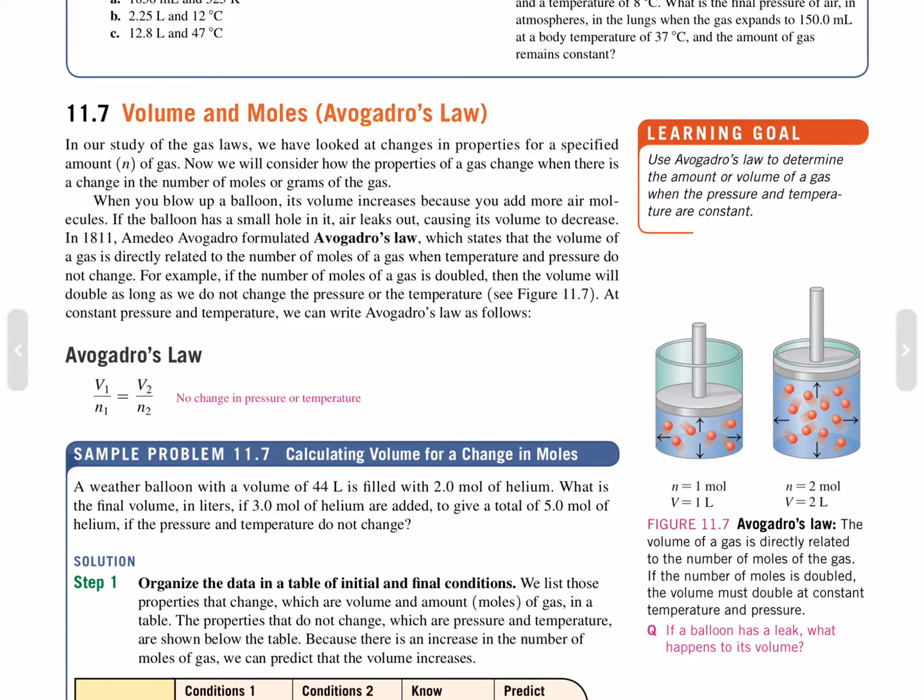When you blow up a balloon, its volume increases because you add more air molecules. If the balloon has a small hole in it, the air leaks out, causing the volume to decrease. In 1811, Amedeo Avogadro formulated Avogadro's Law, which stated that the volume of gas is directly related to the moles of gas when the temperature and pressure do not change.